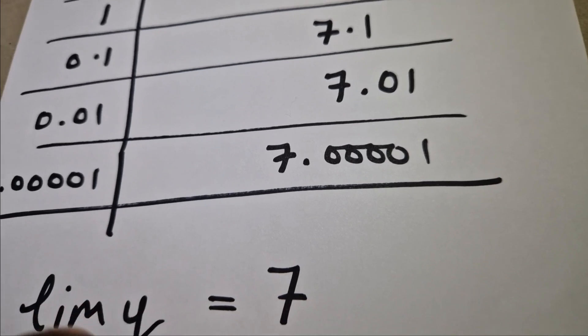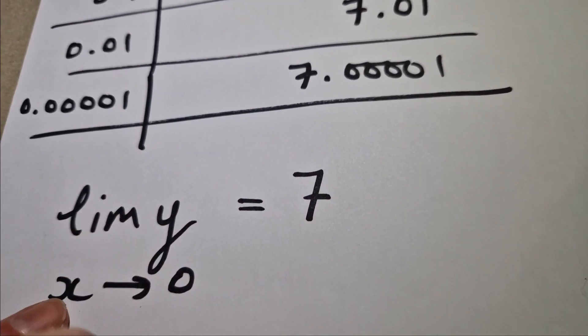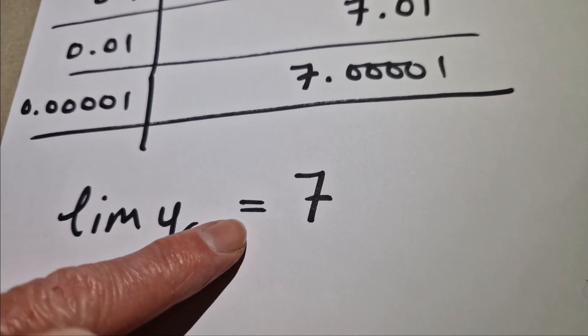So as our final answer, we can say the limit of y as x tends to zero is equal to seven.